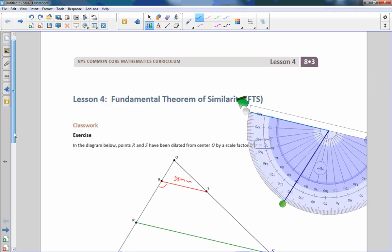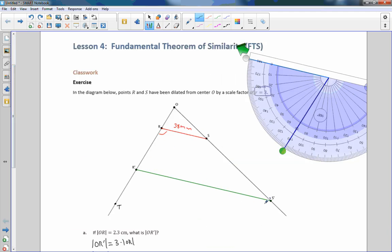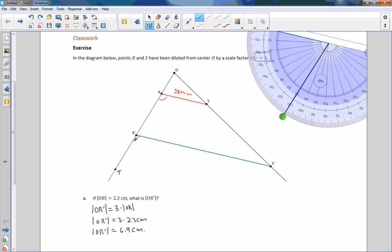So if you look back at this, if these two lines are parallel, like we said they were, then the ray here, OR prime, is a trans, it crosses these two lines here, so it is a transversal. So these are corresponding angles, and corresponding angles are congruent.